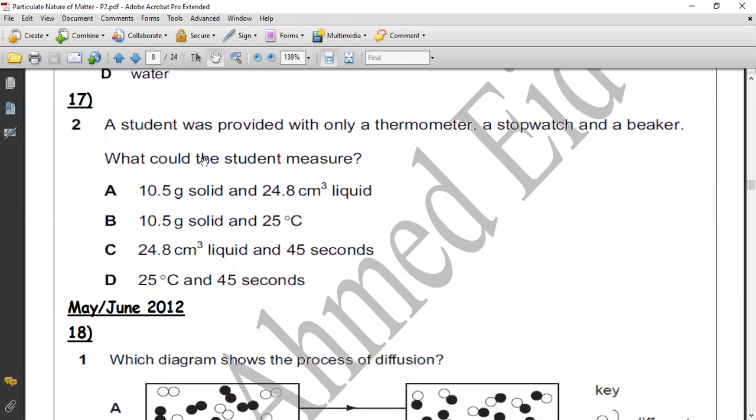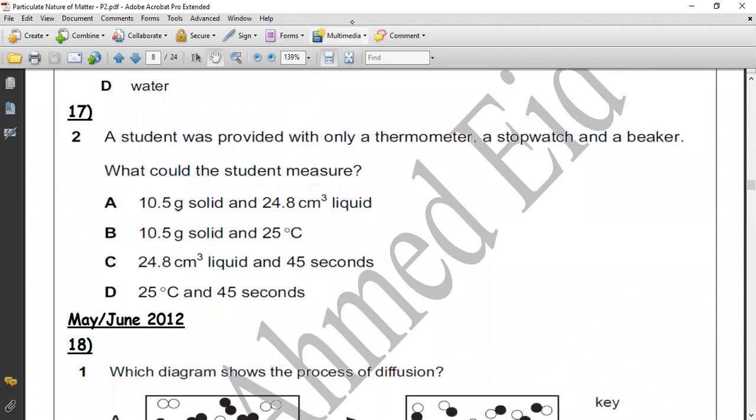Question 17. A student was provided with thermometer - thermometer measures temperature - and a stopwatch - stopwatch measures time. What could the student measure? In this case, mass needs balance. Volume needs pipette or burette. Volume needs pipette or burette. So the correct answer is D: temperature and time.